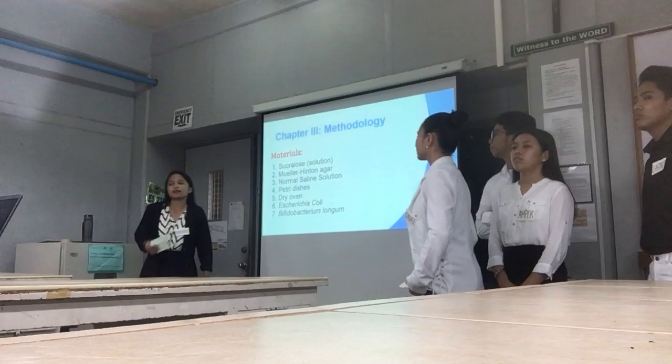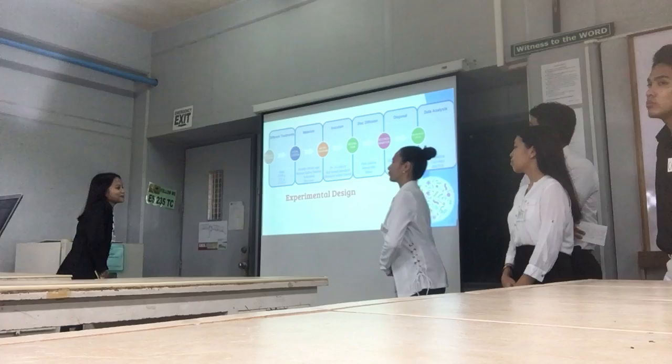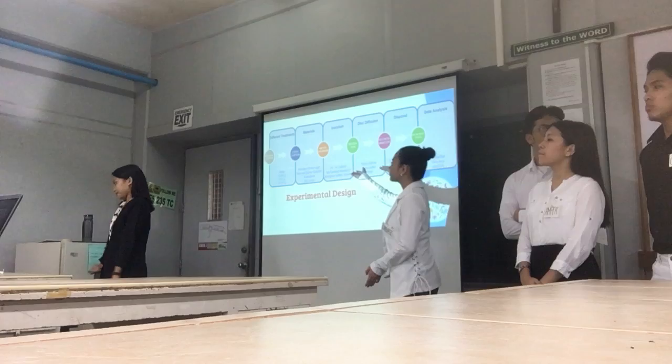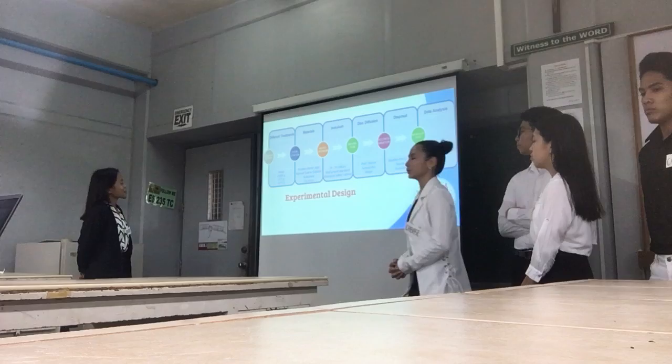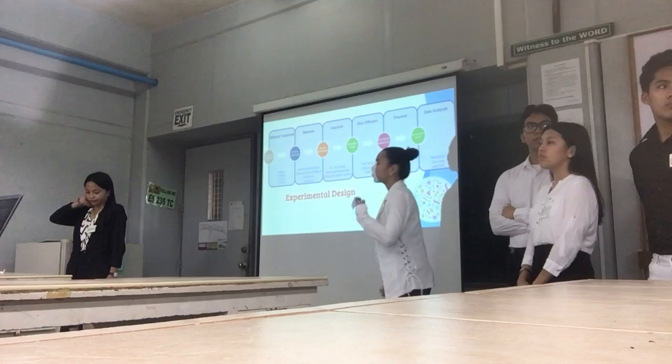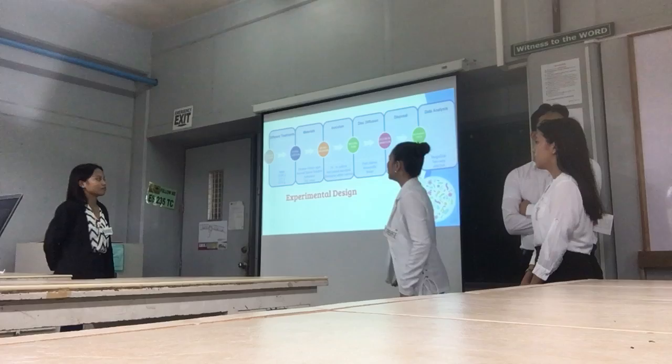For our experimental design, a diagram in our PowerPoint presents the six main processes involved in the experiment. First is the preparation of different treatments. We will be using sucralose solutions, prepared using one millilitre of distilled water and dissolving 0.005, 0.010, and 0.015 grams in one millilitre of distilled water each.